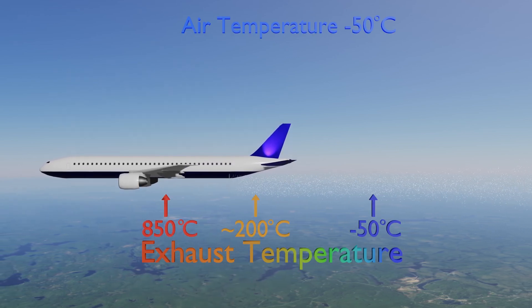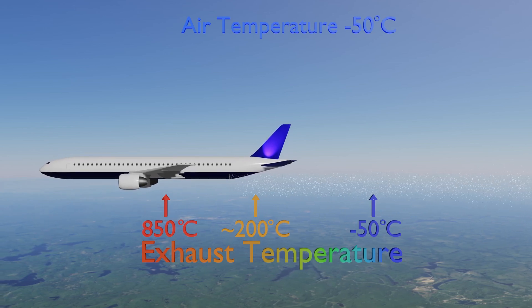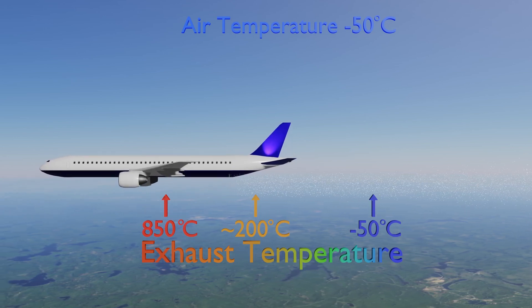So is it this straightforward? Will clouds now form? Well, it turns out there's one more piece to the puzzle in understanding contrails. This last piece is the curvature effect.